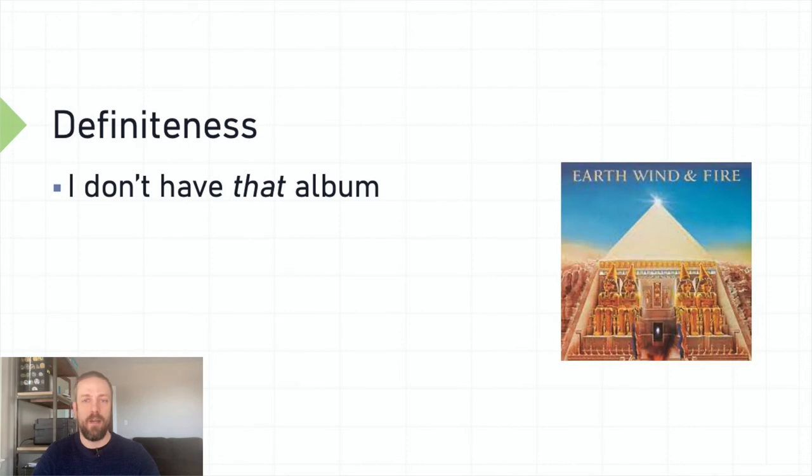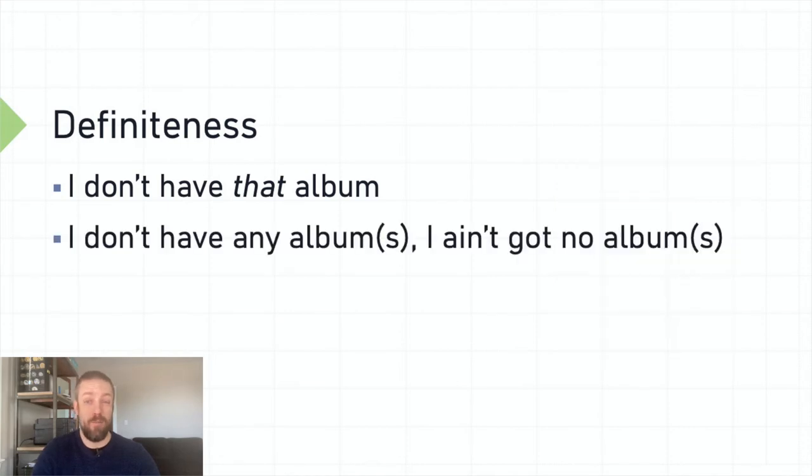Our example sentences are doing something more interesting than this though. Normally we expect that no to function like classroom English any. That is, it doesn't pick out a specific uniquely identifiable thing. I don't have that album, and I don't have any albums, or I ain't got no albums, don't mean the same thing. I ain't got no albums isn't talking about a specific known album.